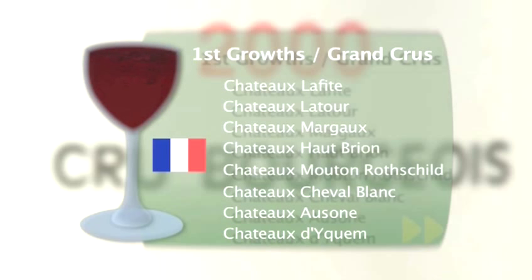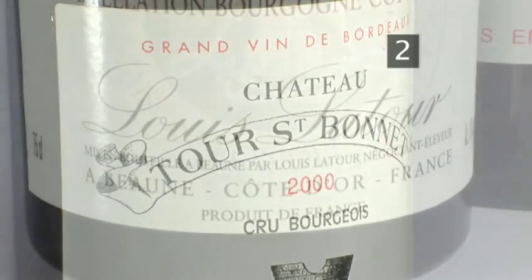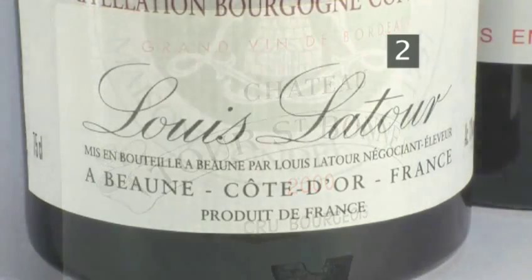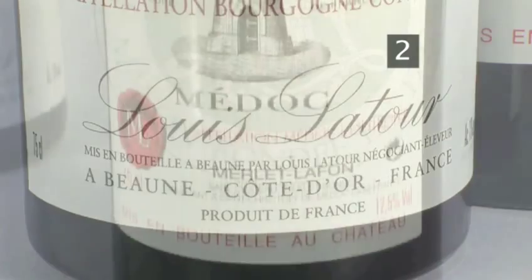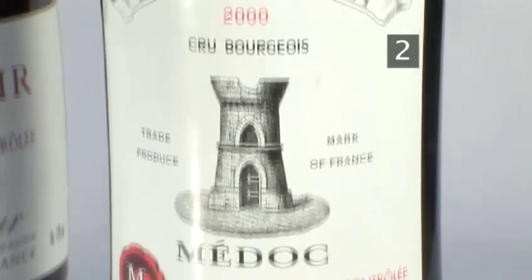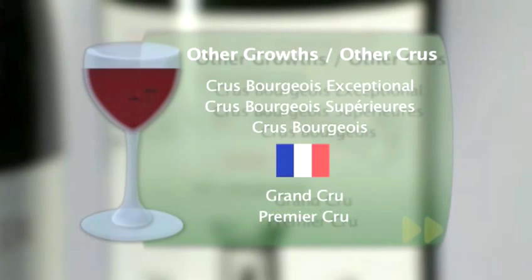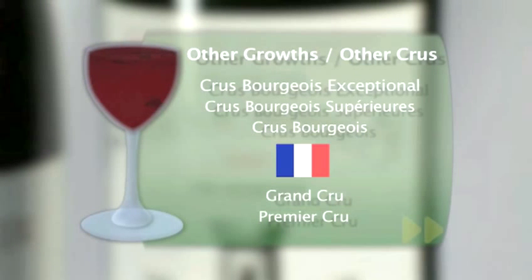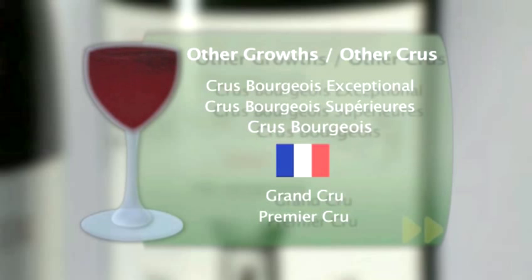These are the finest wines in Bordeaux. There are also second, third, fourth, and fifth growths, which are still very good wines and very expensive, but of slightly lesser quality than the first growth. There is also, in descending order of quality, Cru Bourgeois Exceptionnel, Cru Bourgeois Supérieur, and Cru Bourgeois.